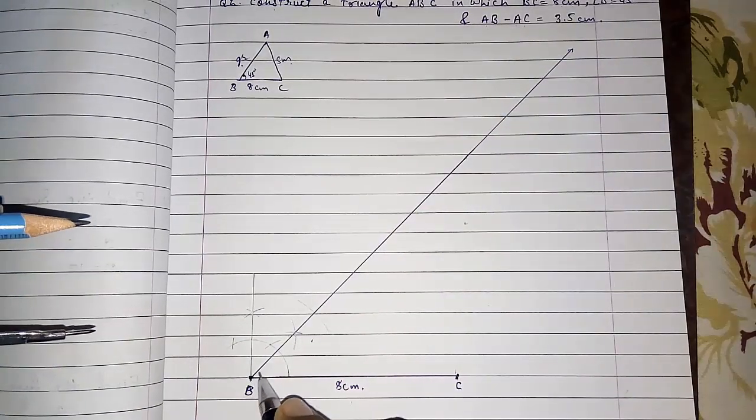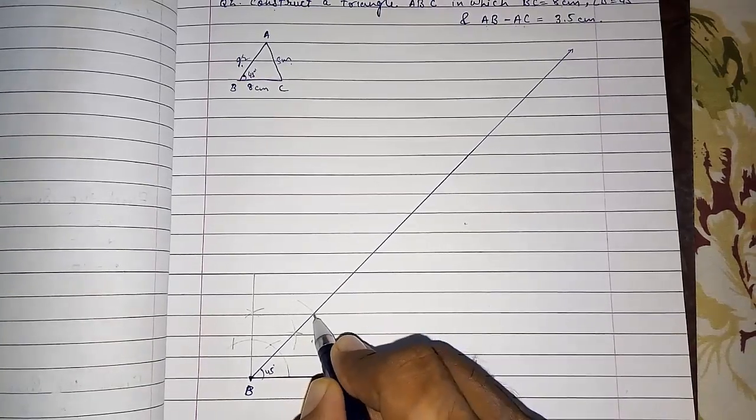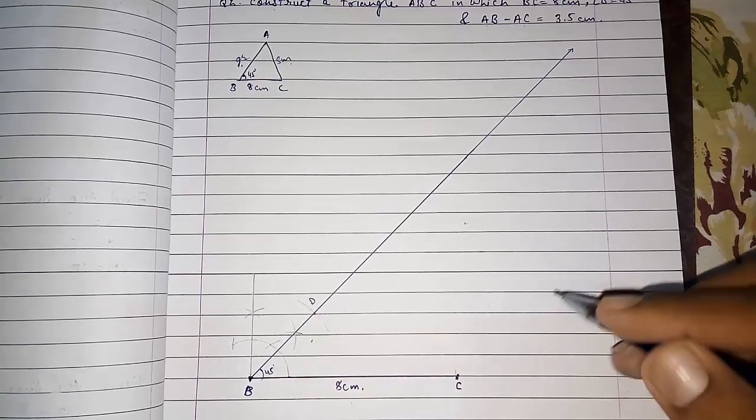So I am going to make the arc of 3.5. This is our third step: first BC 8 centimeters, a ray making an angle of 45 degrees, and then an arc of 3.5 centimeters. Give that point name D. Now join C to D.